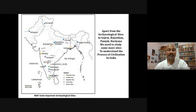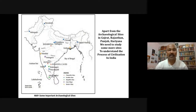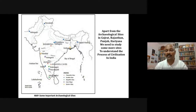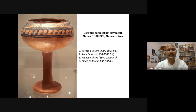Apart from archaeological sites in Gujarat, Rajasthan, Punjab, and Haryana — which are the sites typically taught in Maharashtra's school syllabi — we need to study more sites to understand the process of civilization in India. Only reading about Harappa, Mohenjo-daro, Lothal, Kalibangan, and Dholavira is not enough; we need to study other sites also.